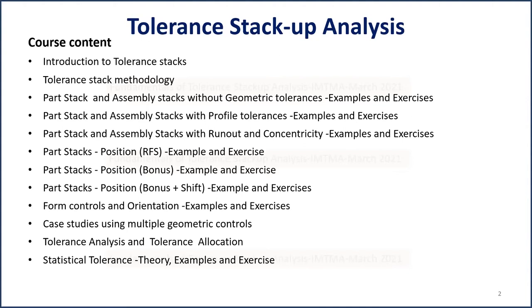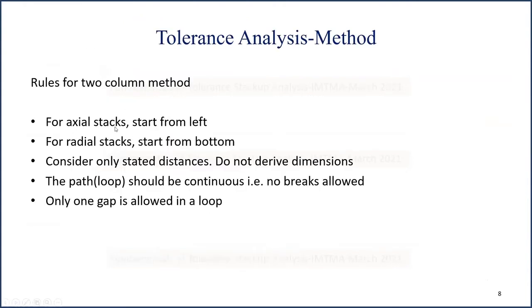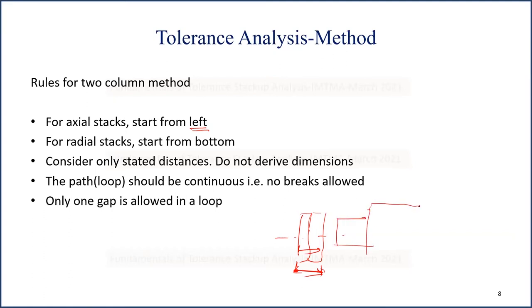Now for the rules for the two-column method: for axial stacks — when you are moving in the axial direction — suppose you have cylindrical parts with an axis, and you're moving from one end to the other to find total thickness. You move from left to right. For radial stacks, when you have cylindrical parts and you want to find the maximum and minimum distance between an OD and an ID, you start from the bottom.